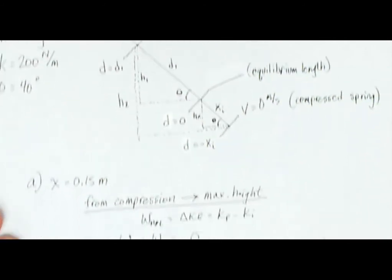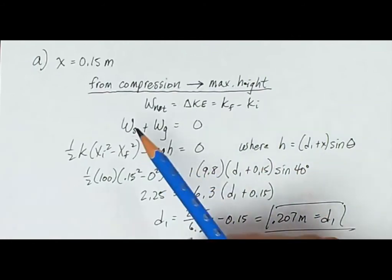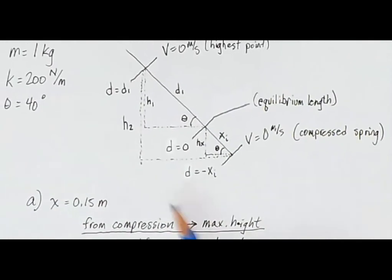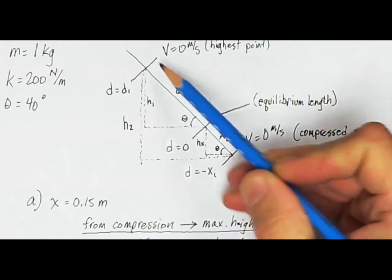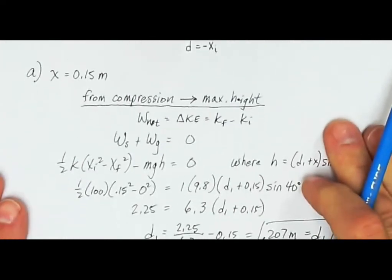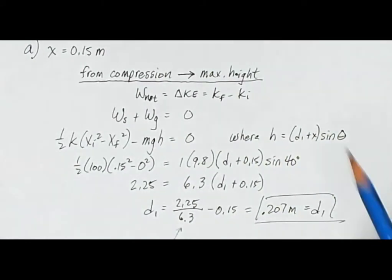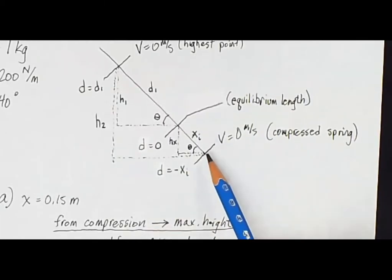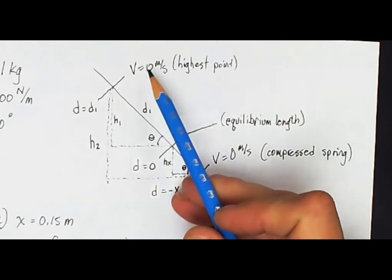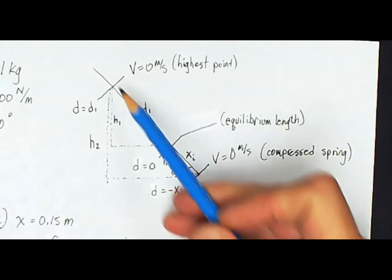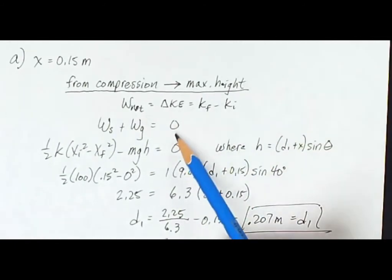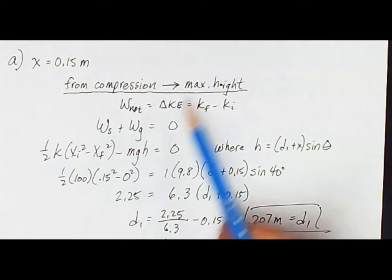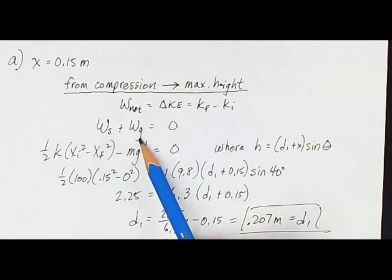So how high does it go when I compress the spring 15 centimeters? I'm going to analyze from the compression all the way to the maximum height using the work-kinetic energy theorem: net work equals change in kinetic energy. At the bottom the velocity is zero, and at the highest point the velocity is also zero, so the net work overall equals zero. I have two forces at work: the spring and gravity.